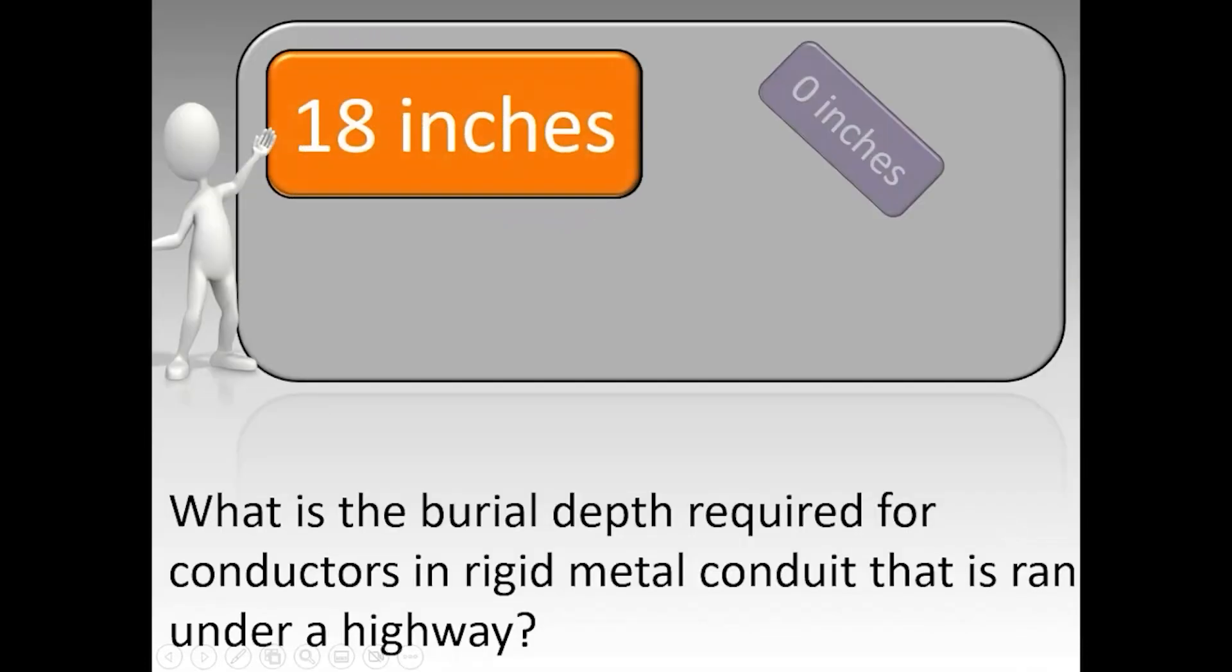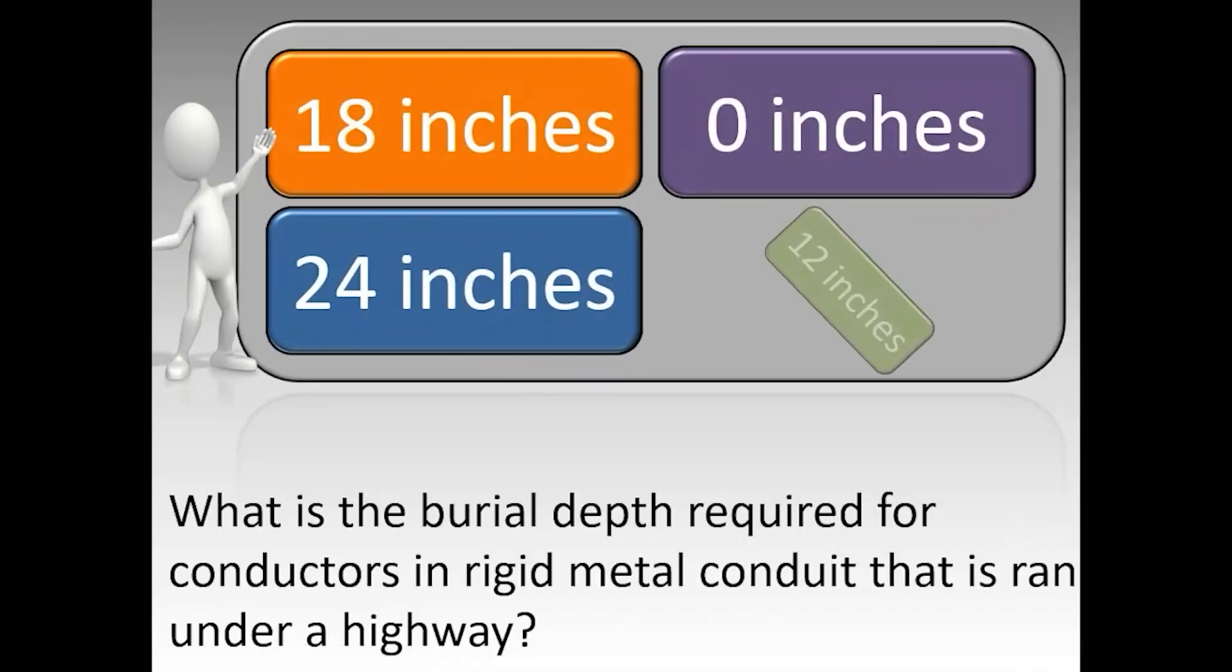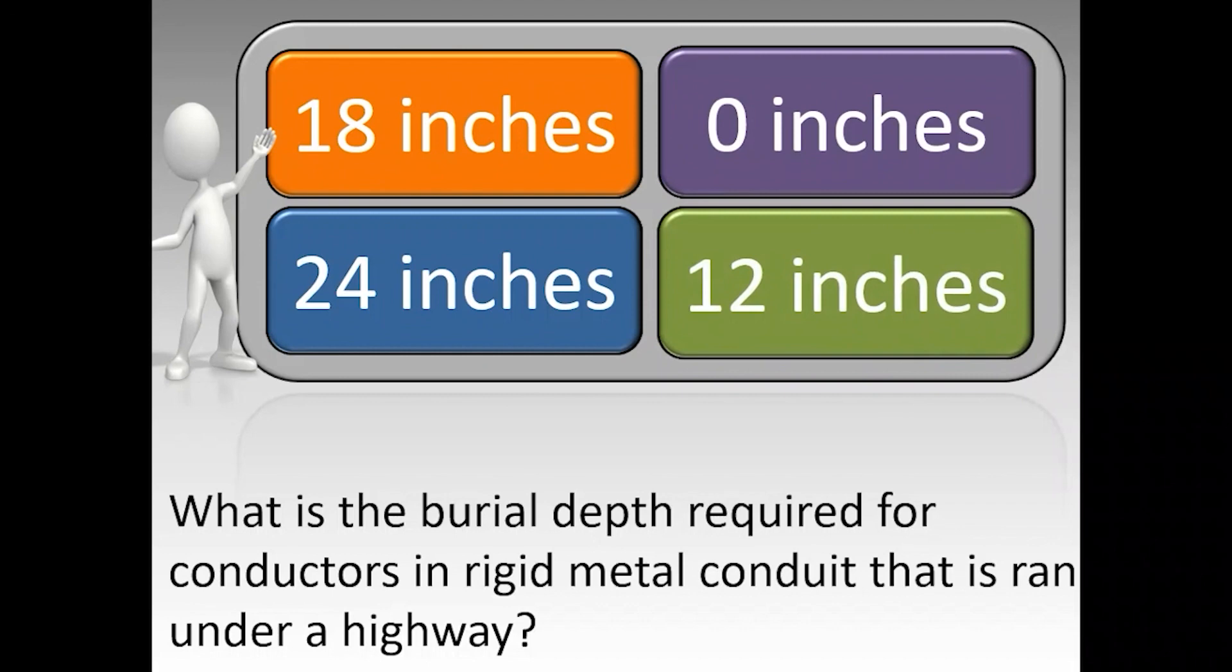What is the variable depth required for conductors in rigid metal conduit that is ran under a highway? The correct answer is 24 inches.